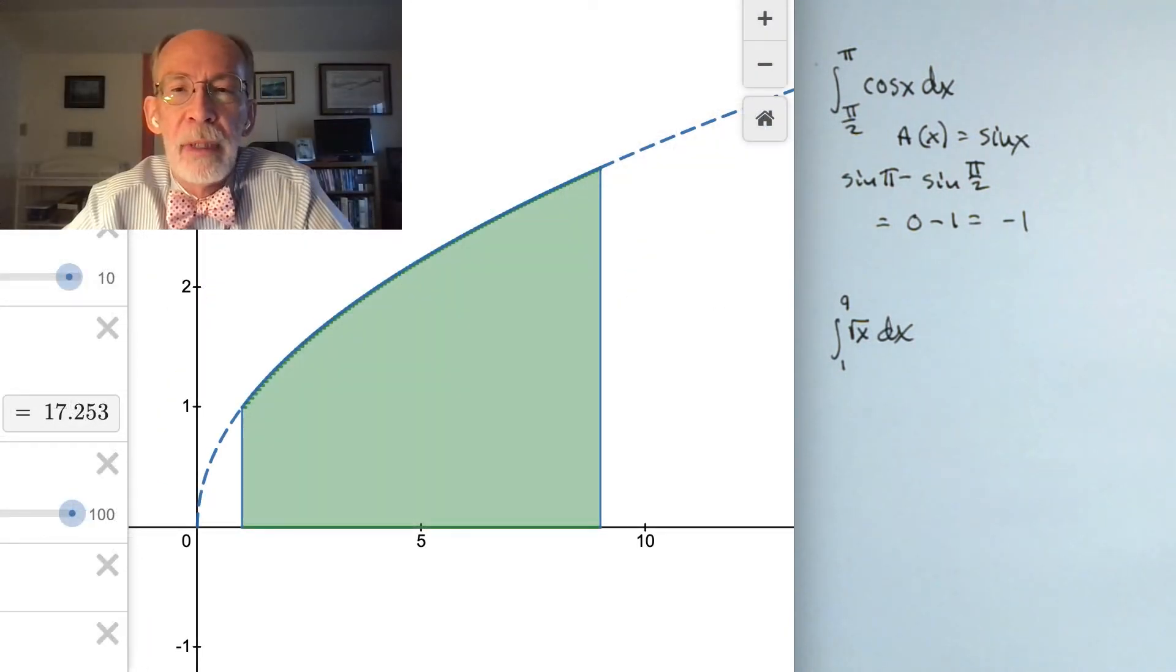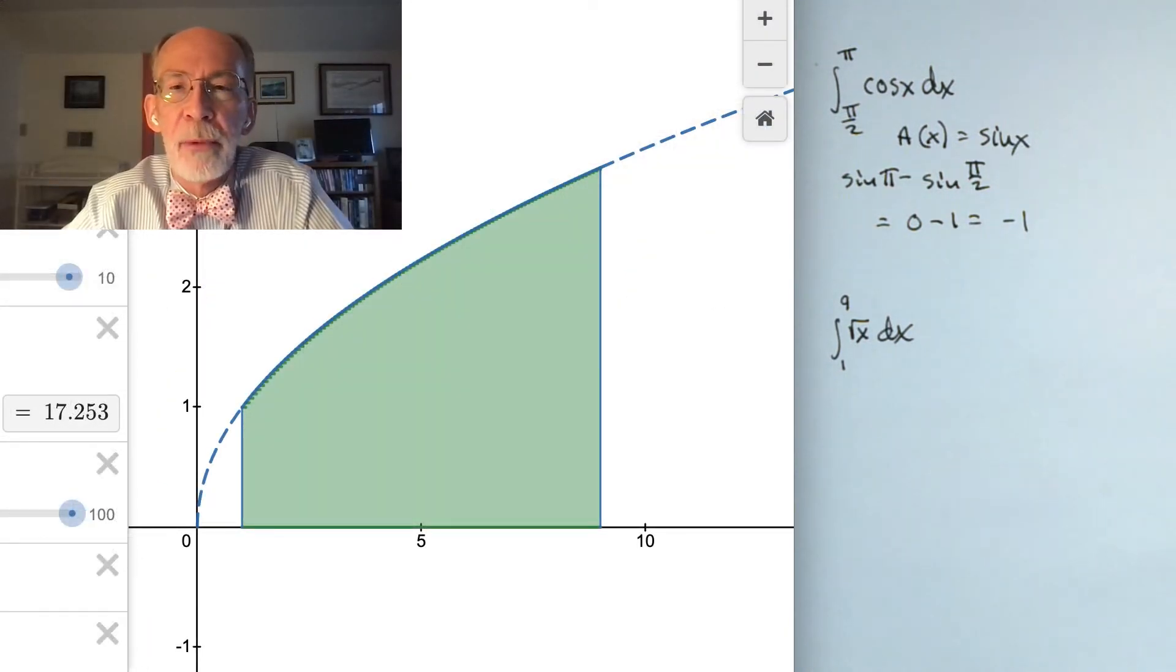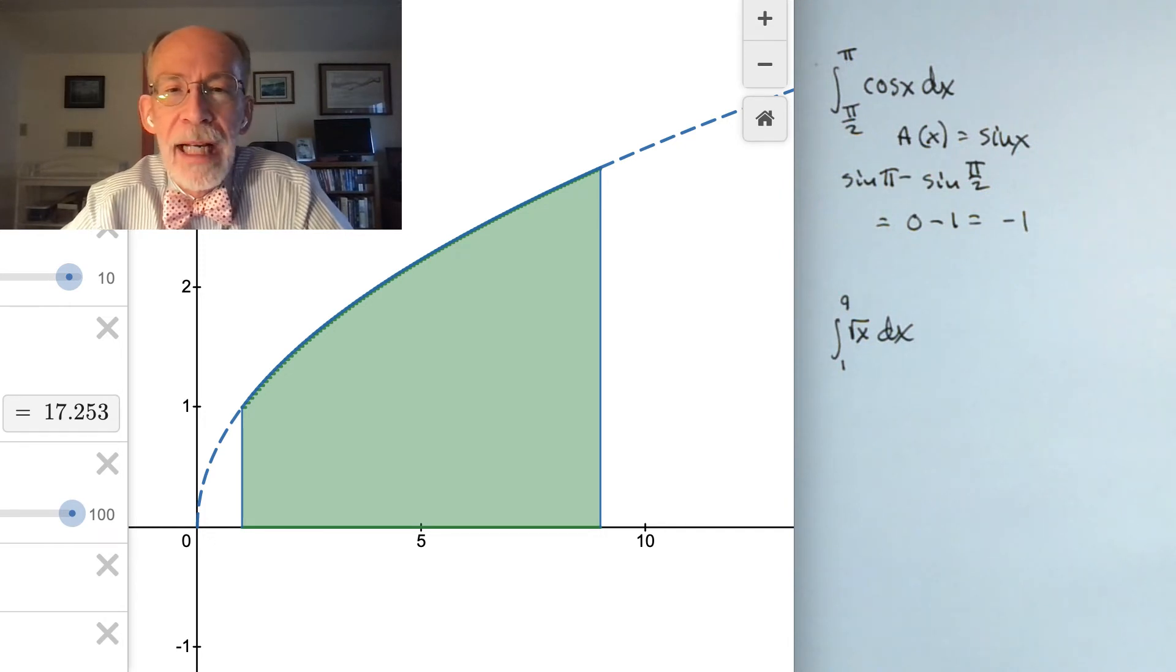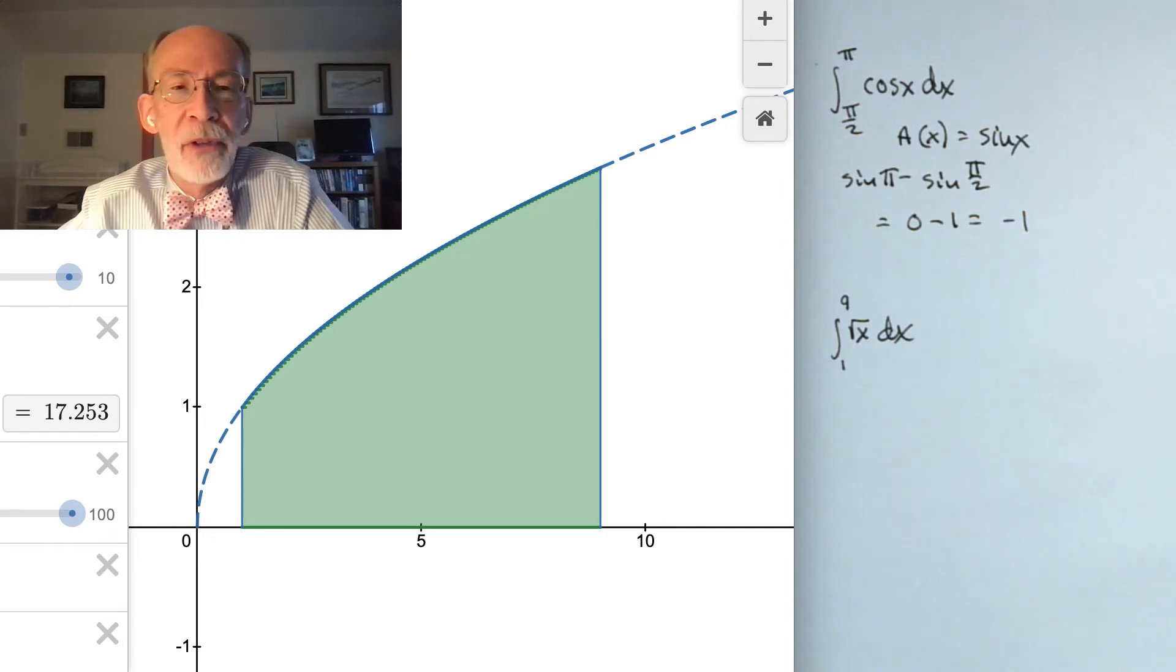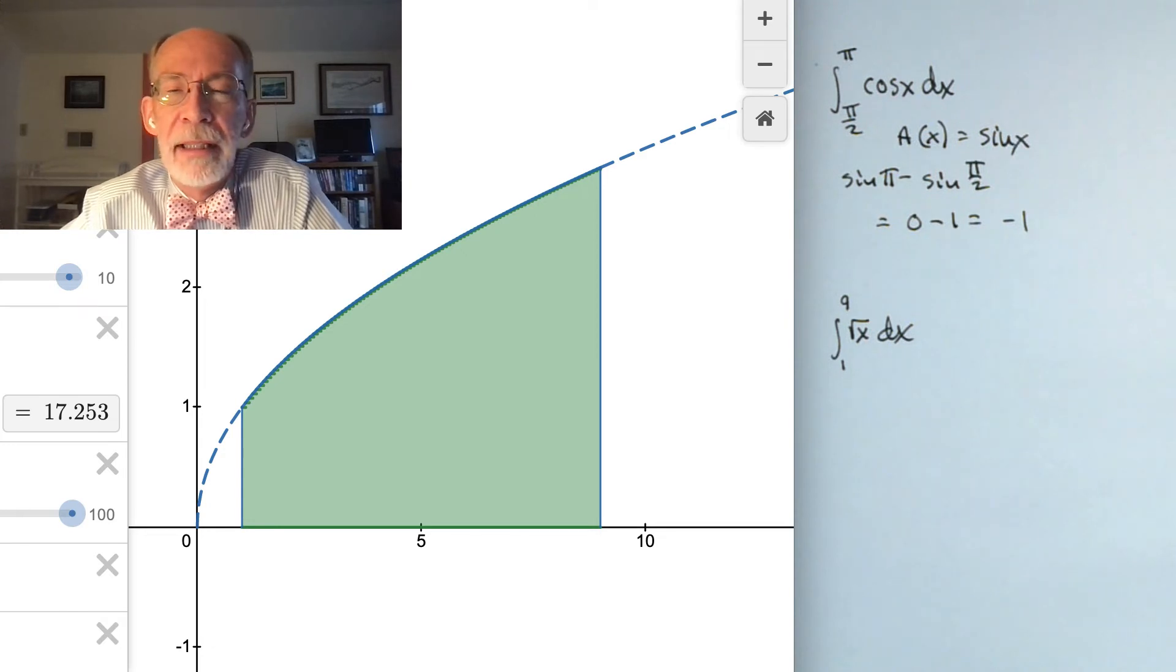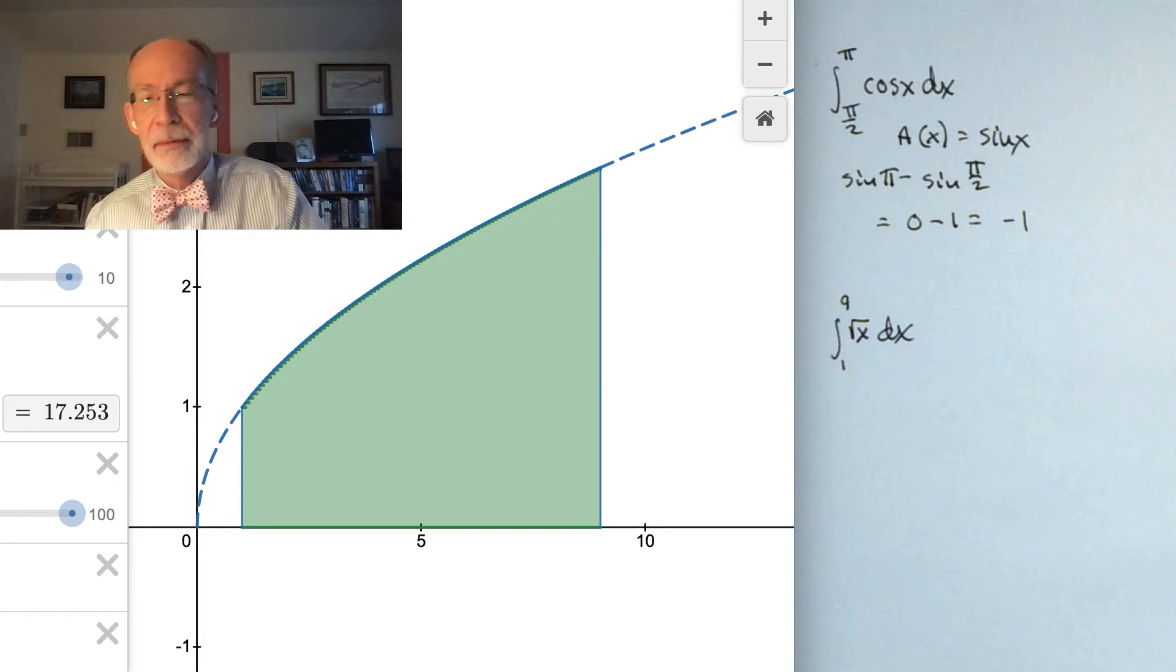Here is the square root function from x equals 1 to x equals 9. 100 midpoints. You can see that estimate is 17 and a fraction. Let's see if we can assess whether this pattern holds up for this function on this interval as well. And as the evidence begins to accumulate, we start to think that undifferentiating, so to speak, is going to be the key to unlocking definite integrals.